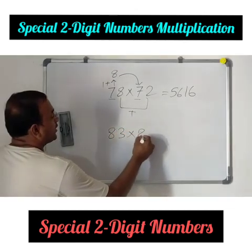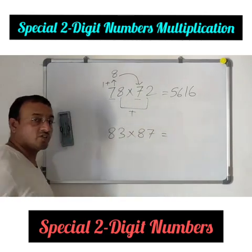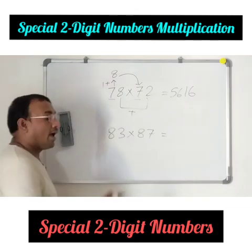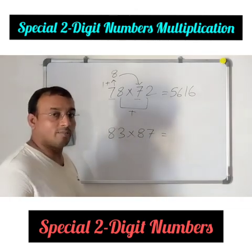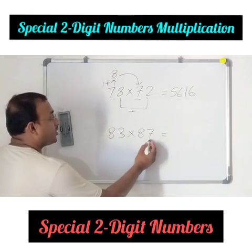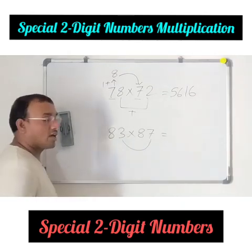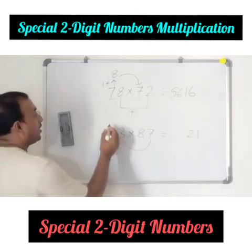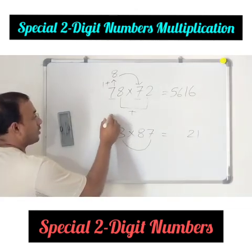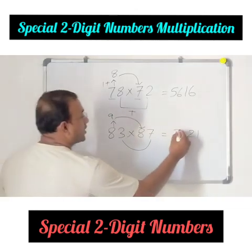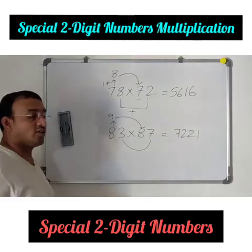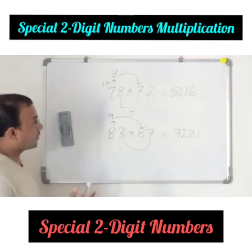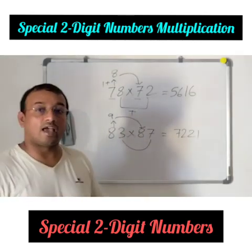Let me take some bigger numbers: 83 into 87. Are the numbers special? Yes, they are special — because the tens digits are both 8, and the ones place digits 3 plus 7 add up to 10. So, multiply the ones place digits: 7 times 3 is 21. Start writing from the right side corner. Then take one more: 8 plus 1 is 9. 9 times 8 is 72. So 83 into 87 is 7221. Oh, this method is interesting as well as awesome, friends!